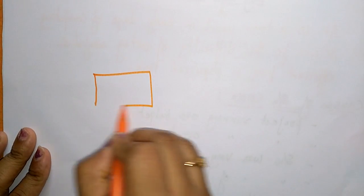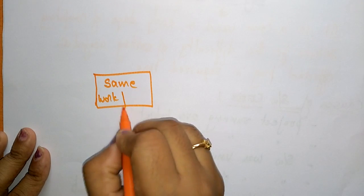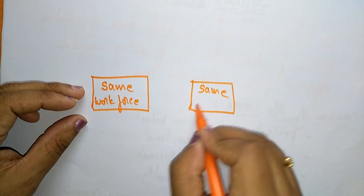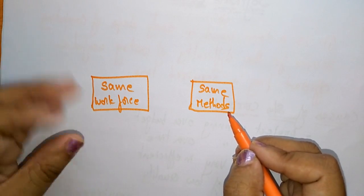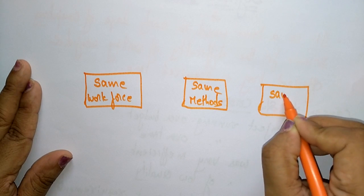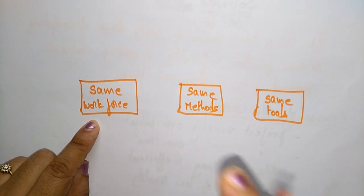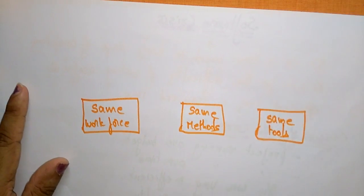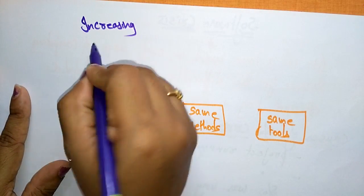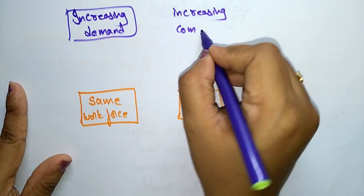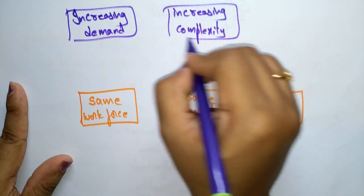Let me explain diagrammatically when the software crisis will occur. Suppose if you use the same workforce — a limited number of people — the same methods without changing anything, and the same tools without adding any advanced techniques, even though the demand is increasing and the complexity is increasing.